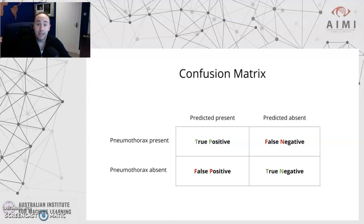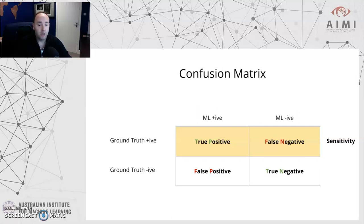Of course, the algorithm can be wrong. It can say there's no pneumothorax when there is one — and that's a false negative. Or it can say there is a pneumothorax when there isn't one — and that's a false positive. This can be applied to any binary classification task, simply by switching out the labels for the rows and columns to whether the machine learning algorithm is positive or negative, and whether the ground truth was positive or negative.